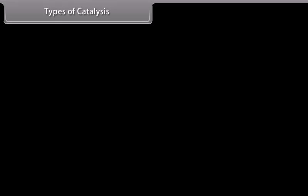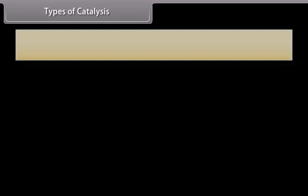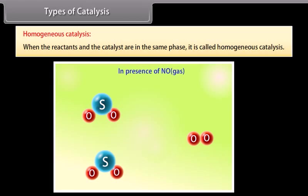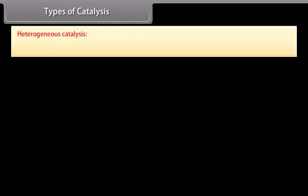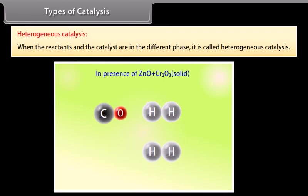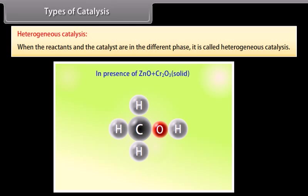Types of catalysis: Catalytic reactions are of two types — homogeneous catalysis and heterogeneous catalysis. Homogeneous catalysis occurs when reactants and catalyst are in the same phase. For example, oxidation of sulfur dioxide into sulfur trioxide in the presence of nitric oxide in the lead chamber process for manufacture of sulfuric acid — reactants SO₂ and O₂ and the catalyst nitrous oxide are all in the gaseous phase. Heterogeneous catalysis occurs when reactants and catalyst are in different phases — for example, manufacture of methanol from CO and H₂ using ZnO + Cr₂O₃ as catalyst, where reactants are gaseous and catalyst is solid.